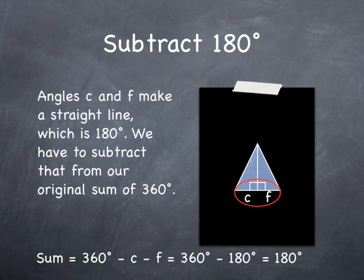C and F together make a straight line, which is 180 degrees. 360 degrees minus 180 degrees leaves 180 degrees.